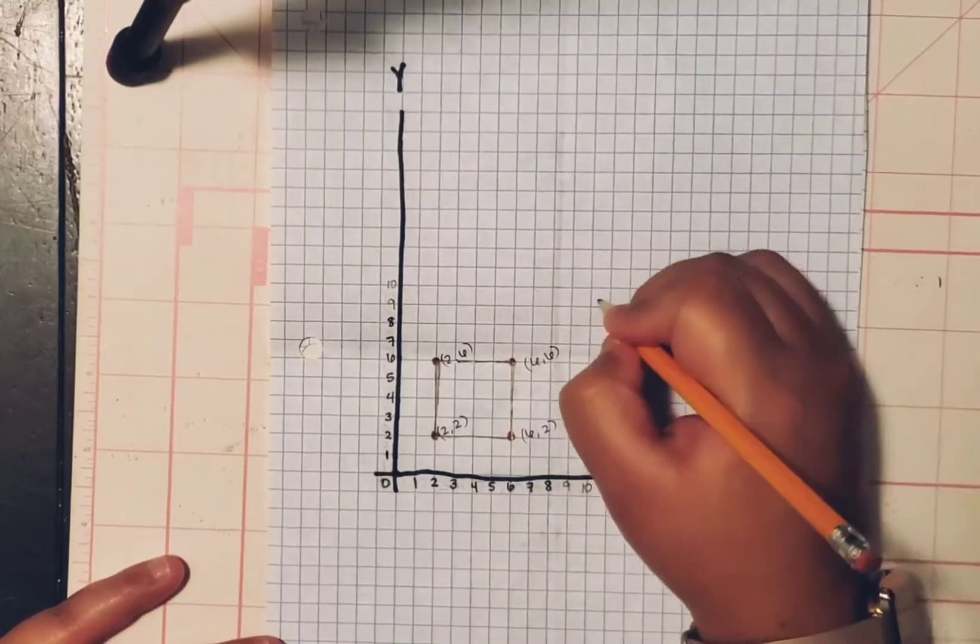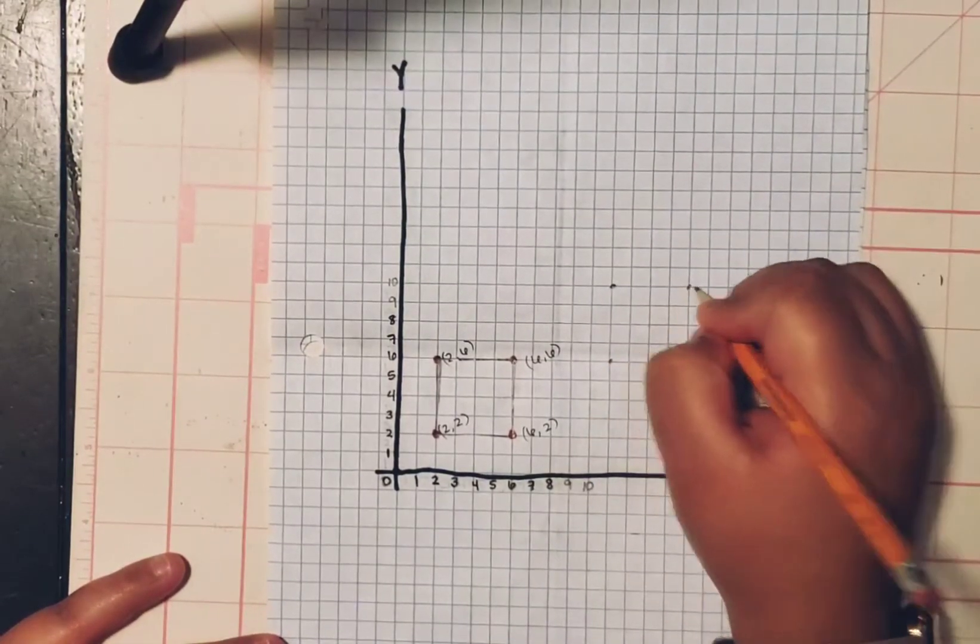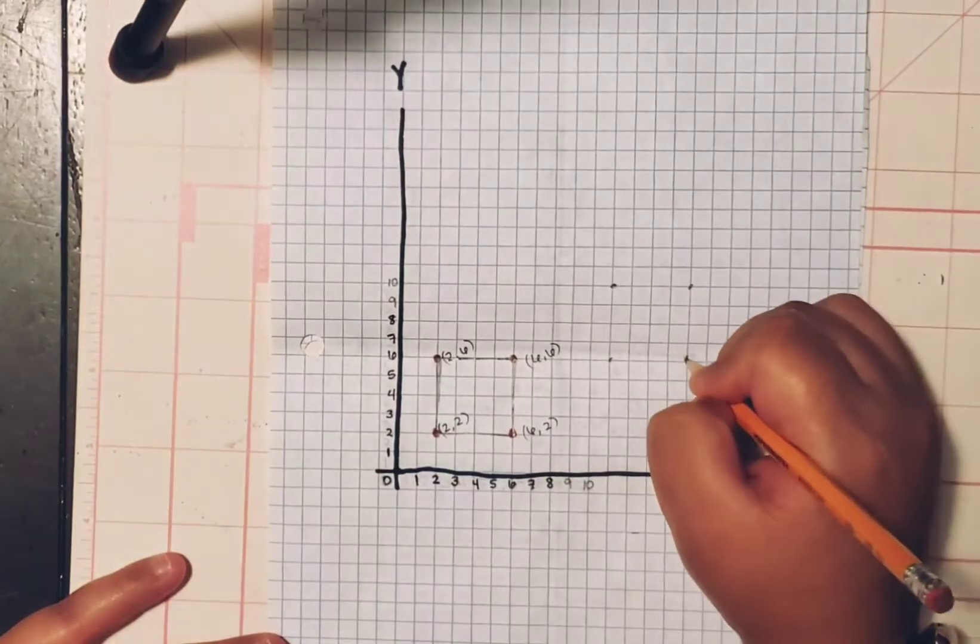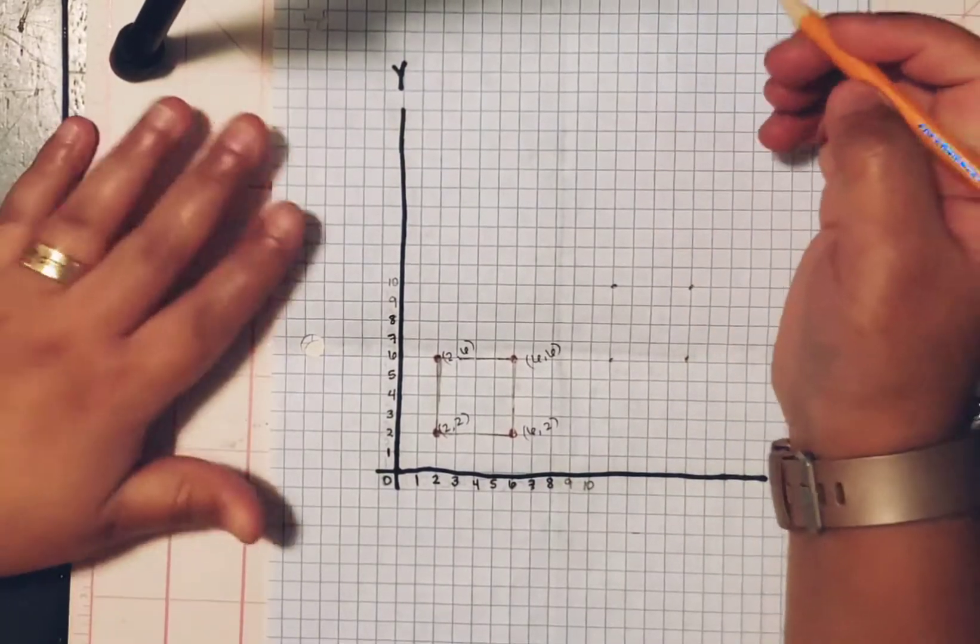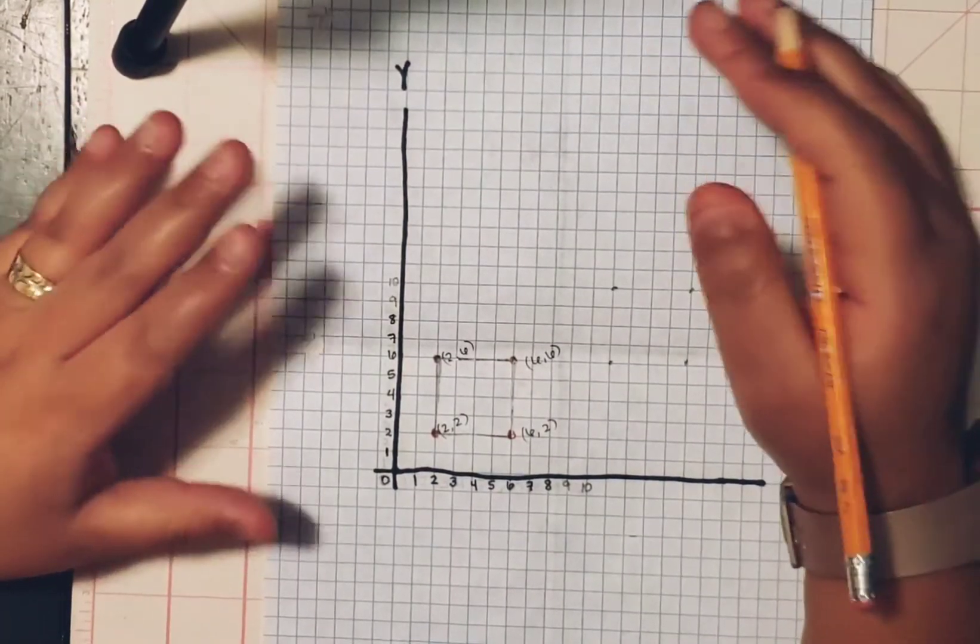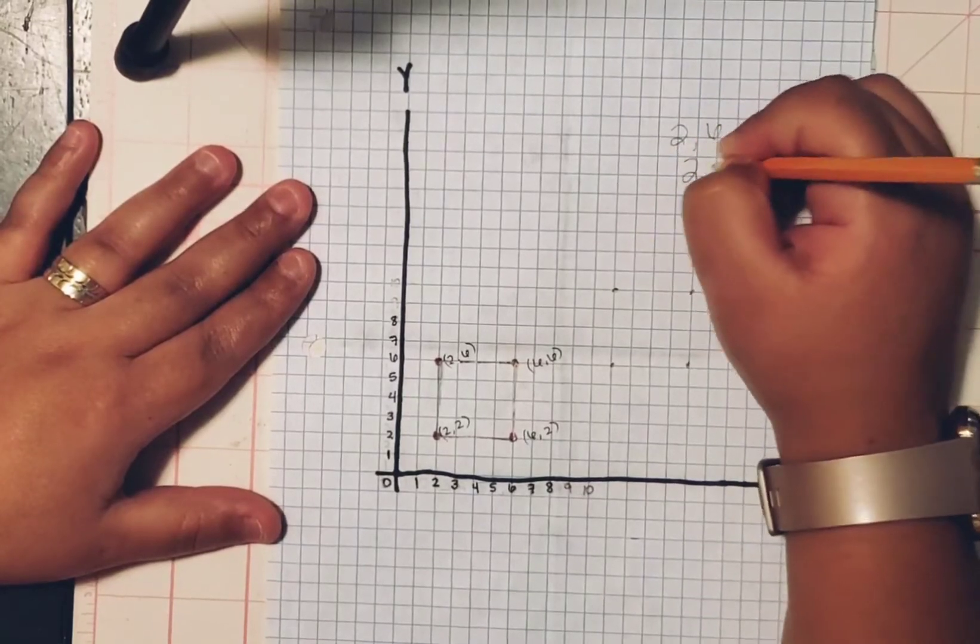For a graph, you obviously plot one right here, one right here, one right here, right here. And as you're plotting, let's say you find them on a graph paper to graph an image. And it has a two, six. And it has a two, two.